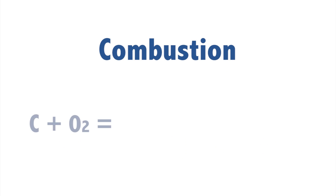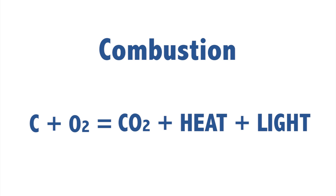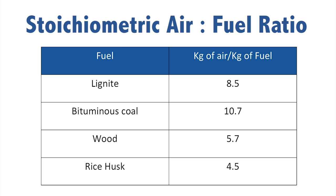When combustion takes place in a boiler, the carbon reacts with oxygen in the air to form carbon dioxide, and along with it releases heat and light. Now for carbon to completely burn, a certain amount of air is required — that is basically the stoichiometric air to fuel ratio. In practice, if we supply the stoichiometric air, it is not possible that the carbon fully combusts, because in the time available for combustion in a boiler, it is impossible that every molecule of oxygen gets one molecule of carbon and both of them combust. So in practice, a certain amount of excess air is required.